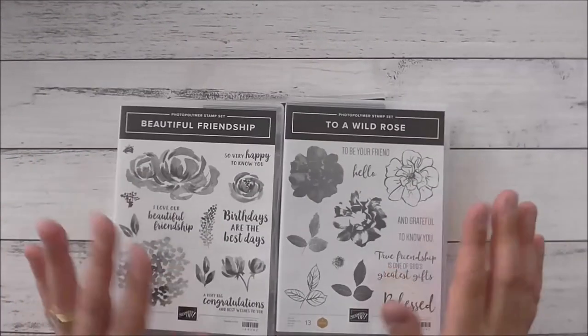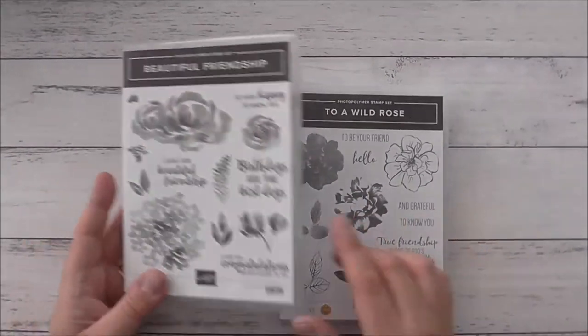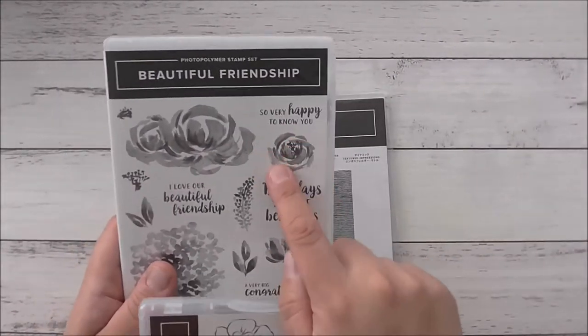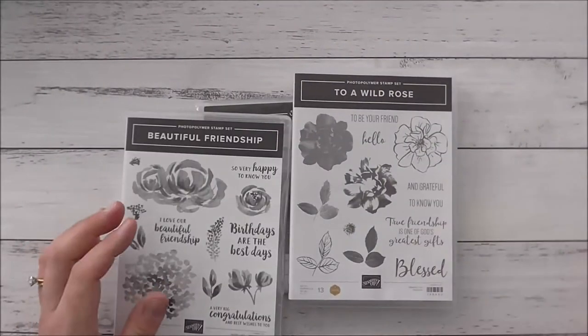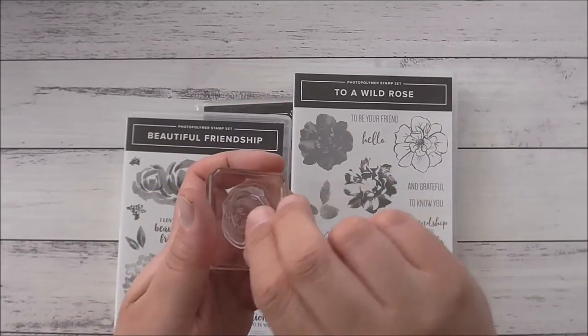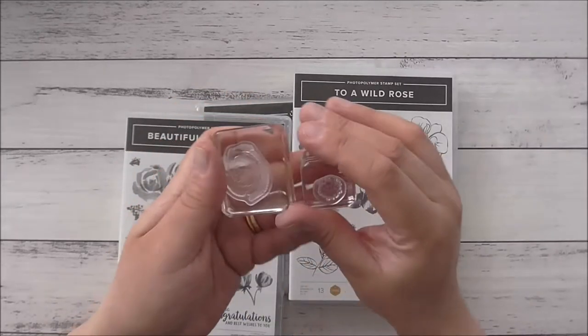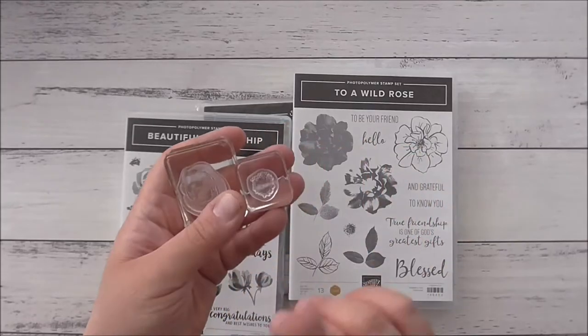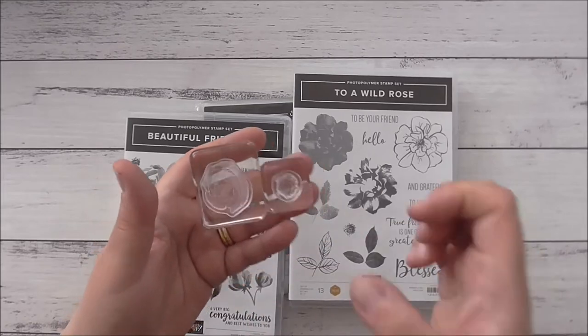I'm going to be using a couple of stamp sets: Beautiful Friendship and To A Wild Rose. Each of these stamp sets has a circular looking image. What I'm doing is turning them over and mounting them smooth side up. So you have the image facing on the block and the smooth side up, and what these will do is provide a nice smooth surface and also give me two abstract looking circles.